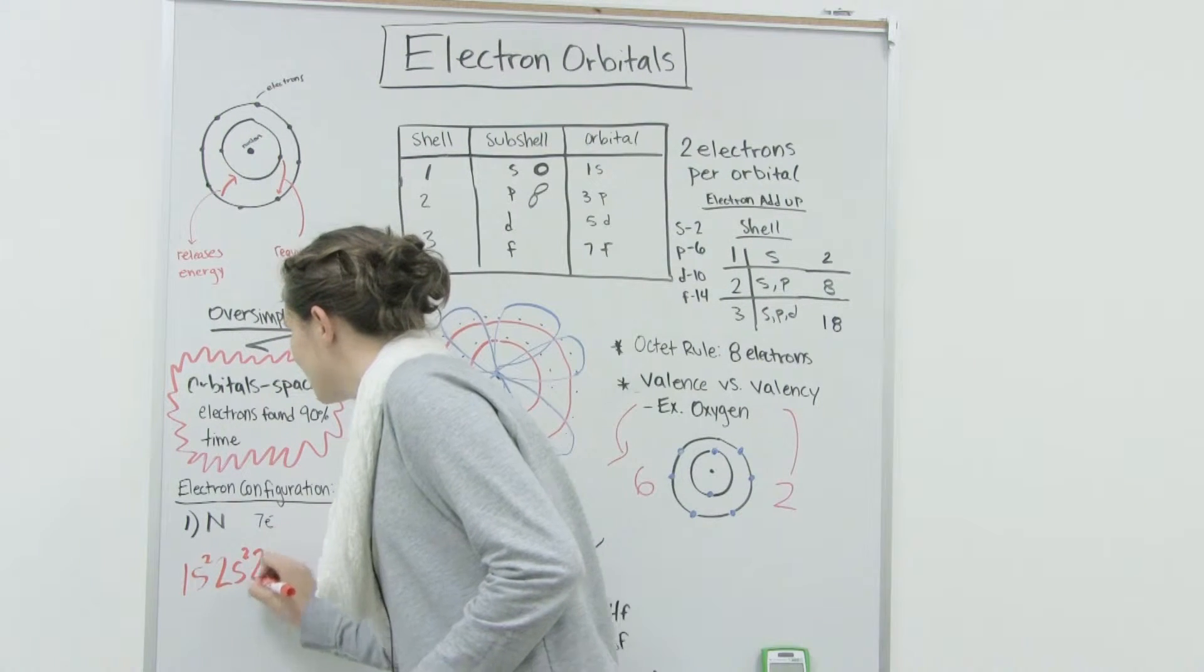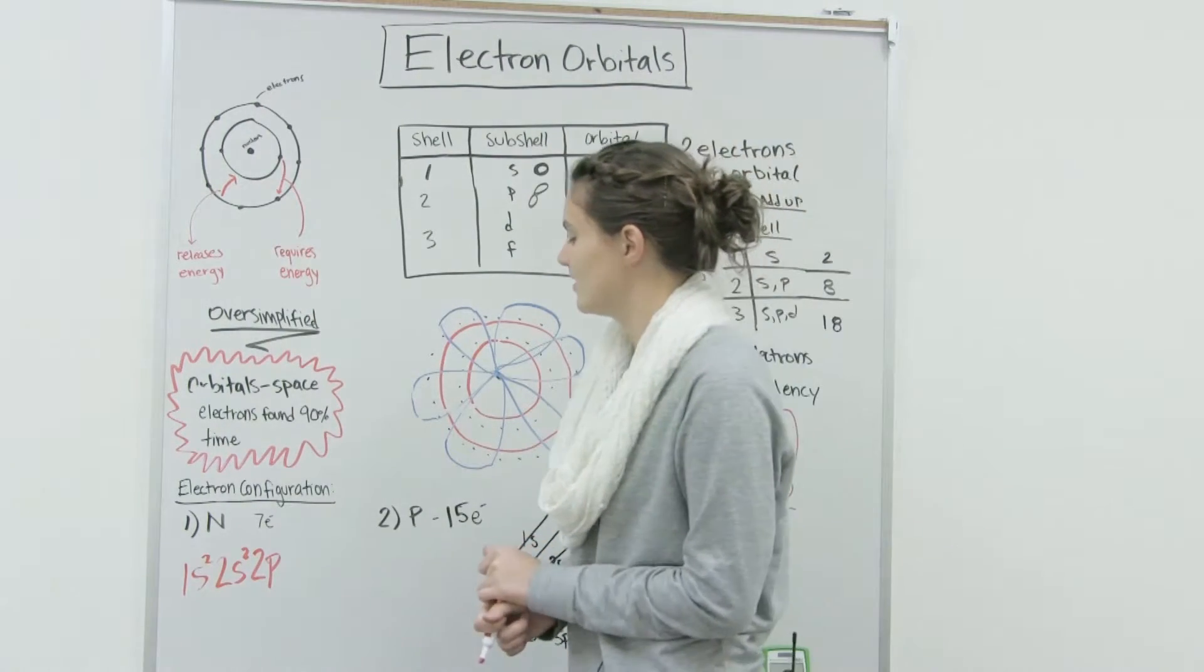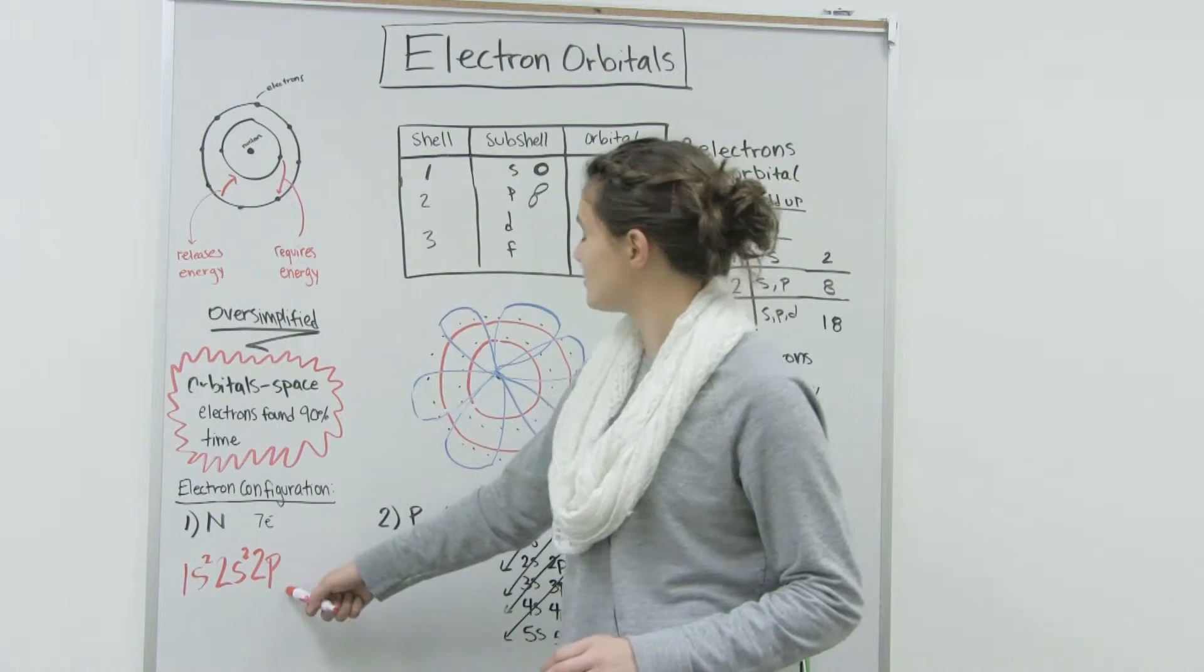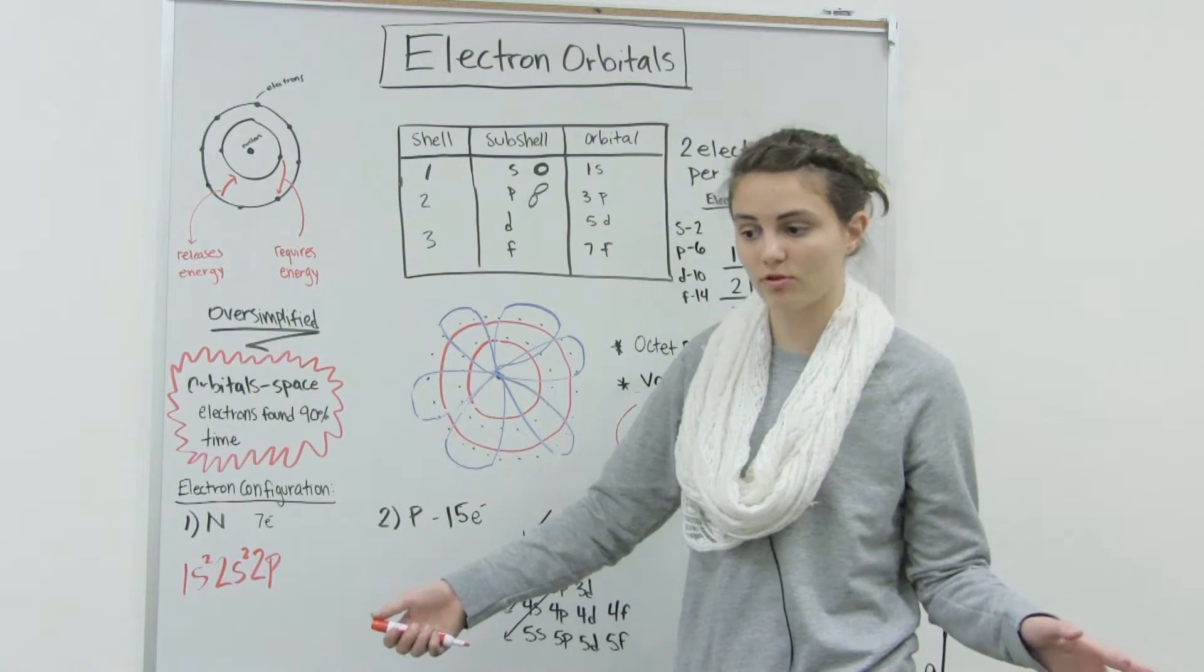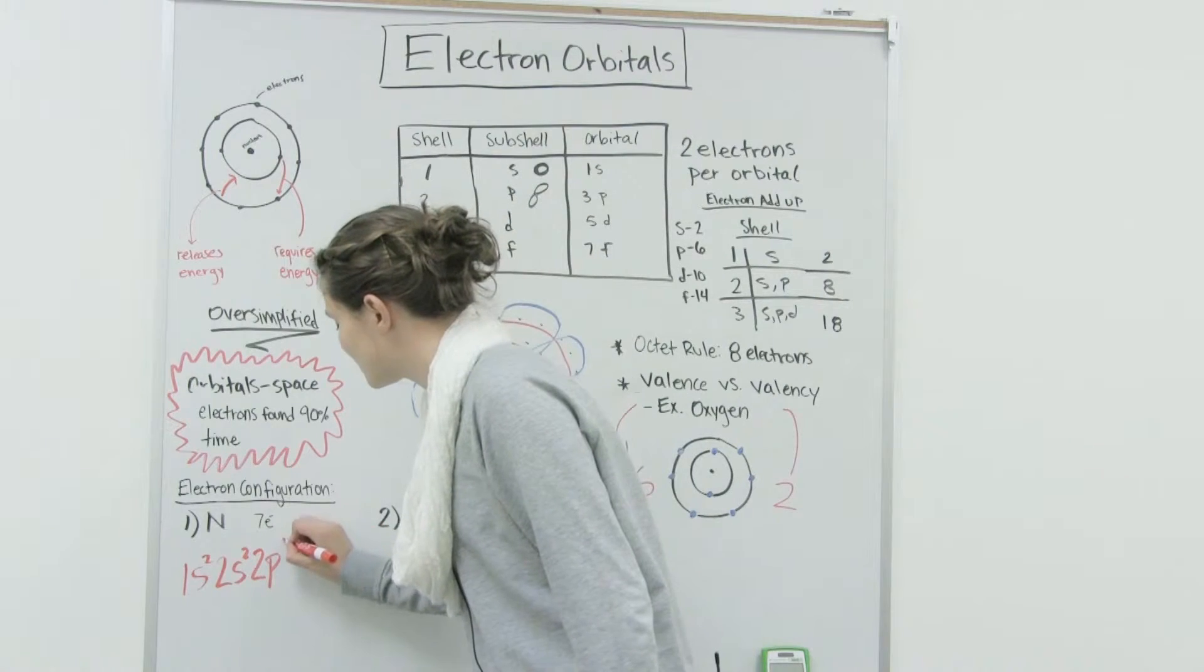Then we're going to go to p because there's a p subshell in the second shell. And so because there's a p subshell, we know that that's three orbitals, so three times two is six. So the max it can fill is six.